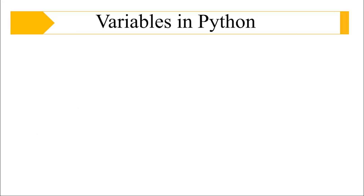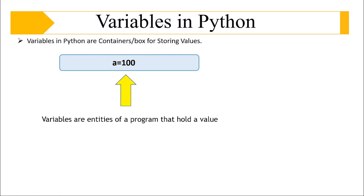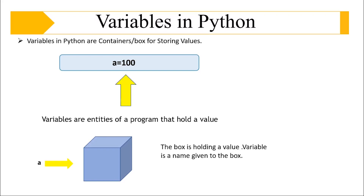Variables in Python are nothing but containers or boxes for storing or holding values. Let's say here I have a variable a in which I want to store some value like 100, so I need to just write a equals 100, where a is the variable and 100 is the value. Variables are also entities of a program that hold the value. You can imagine a variable as a cube kind of box inside the memory — the name given to the box is your variable name.